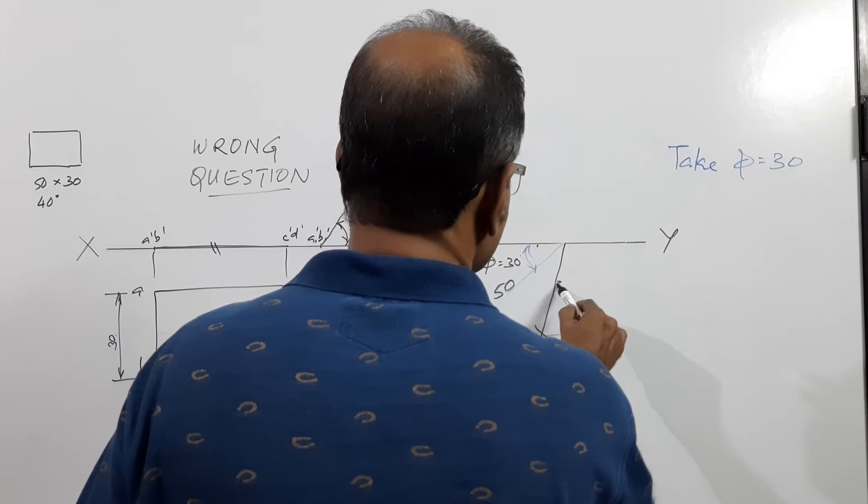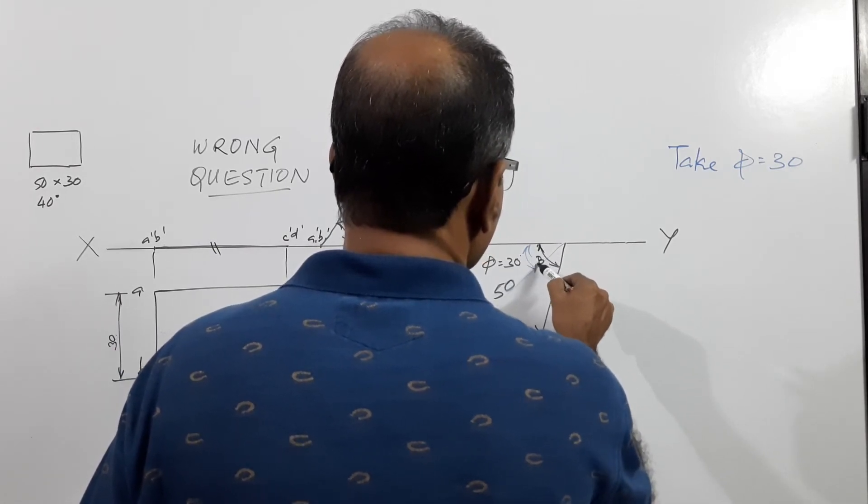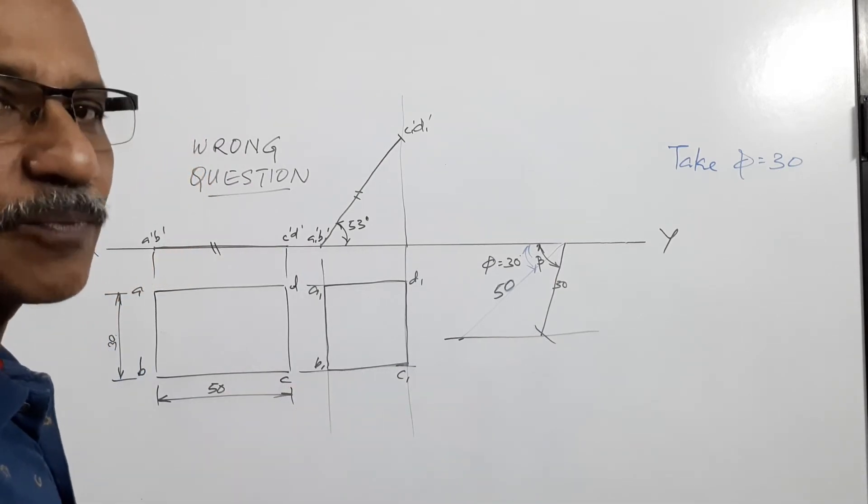What is this? This is 30. What is this? This is beta. With that beta you can redraw the plan.